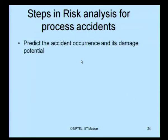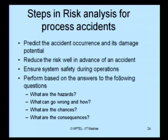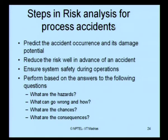Steps for risk analysis of process accidents include: predicting accident occurrence and damage potential, reducing risk in advance, ensuring system safety during operations, and addressing key questions — What hazards exist? What can go wrong and how? What are the chances? What are the consequences? A checklist based on these questions helps prepare for and control high-risk accident scenarios.